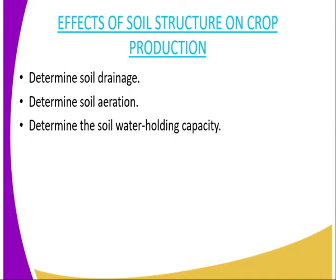Now we have the effects of soil structure on crop production. The first effect is that soil structure determines soil drainage. Soil structures which are well spaced with air spaces in between them are well drained and therefore have good drainage — they allow water to infiltrate and plant roots can access that water more freely.